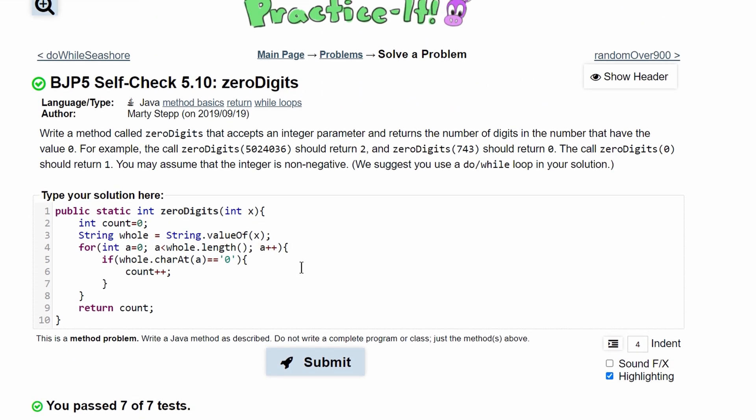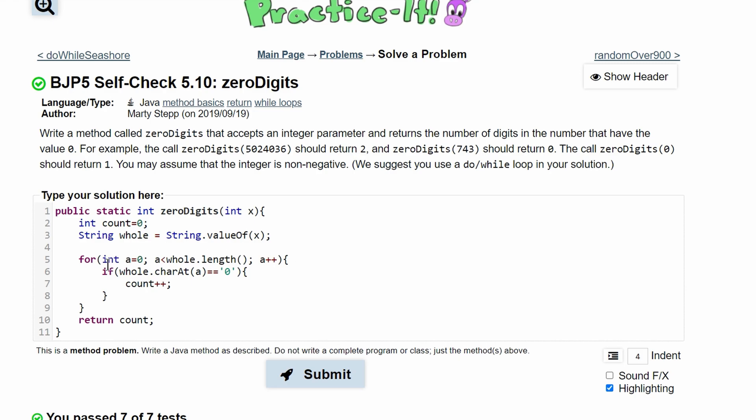We can do this with a for loop, we can also do it with the do-while loop. This is actually a good way to show how to convert a for loop to a while loop or a do-while loop. We're going to take out this first part and paste it right above our loop.